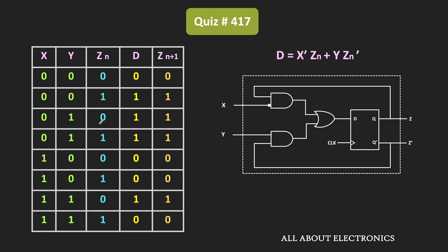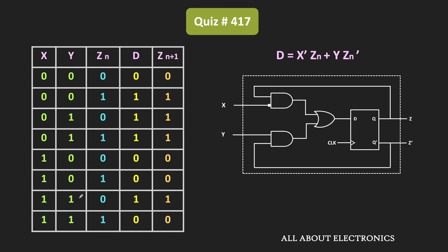Since this circuit has two inputs, it is either an SR flip-flop or a JK flip-flop. This flip-flop cannot be an SR flip-flop, because when both inputs are 1, we are getting a specific output — the output of the flip-flop is getting toggled. That means this flip-flop is not the SR flip-flop, so we conclude it is actually the JK flip-flop. We just need to identify which input is J and which input is K.